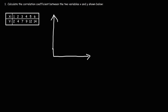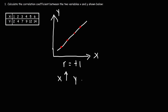So let's say we have a straight line and we have points on the line. The correlation coefficient will be positive one for this situation because all the points are on a line and the line has a positive slope. This is x and this is y. It's a positive correlation because as x increases, y increases — there is a direct relationship between x and y.